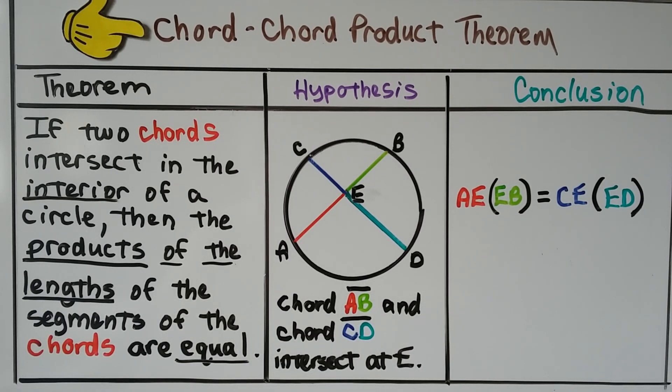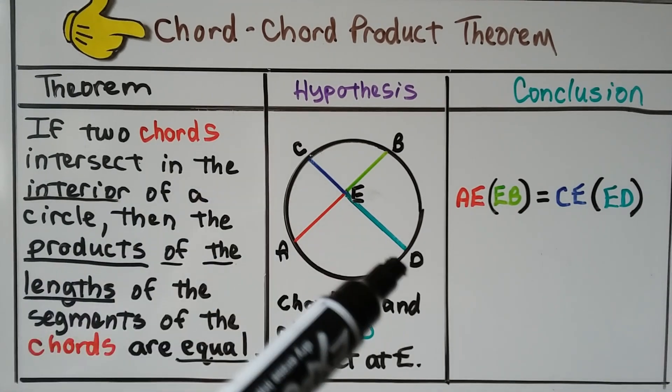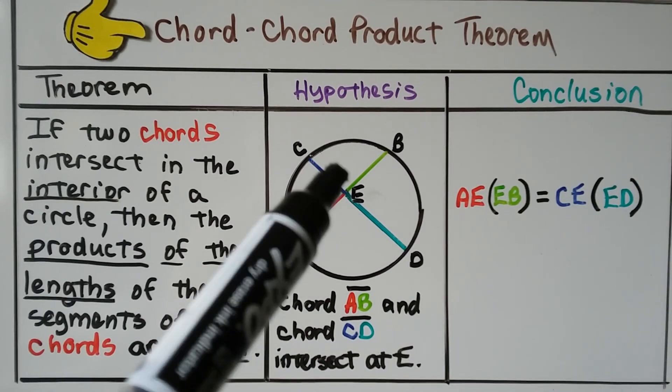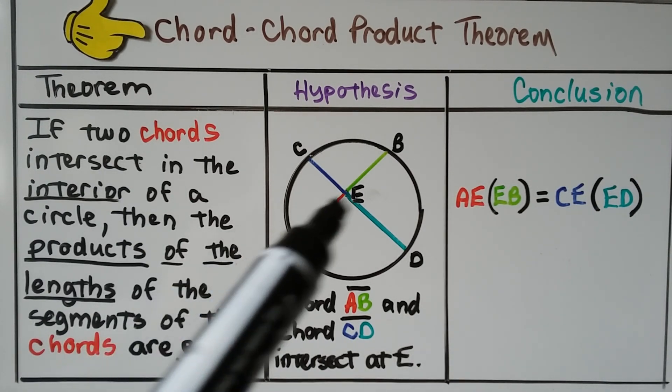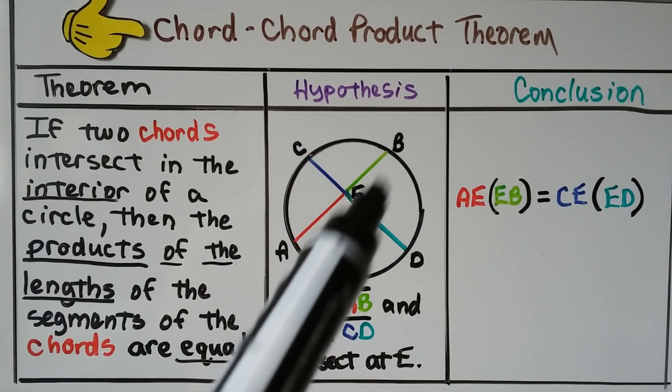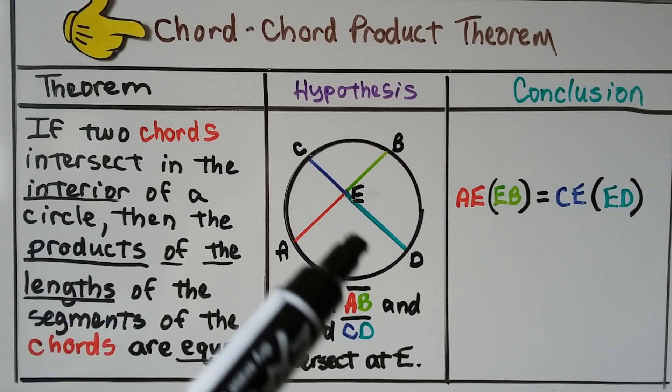The theorem says if two chords intersect in the interior of a circle, then the products of the lengths of the segments of the chords are equal. So we have Chord AB and Chord CD, and they intersect at E in the interior of the circle. So the conclusion is that AE times EB is equal to CE times ED.